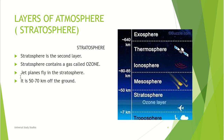The stratosphere is the second layer. The stratosphere contains a gas called ozone. Jet planes fly in the stratosphere. It is 50 to 70 kilometers off the ground. You can see the stratosphere here along with the ozone layer.